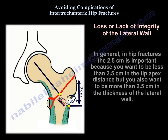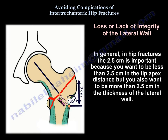In general, for hip fractures, 2.5 cm is a critical threshold: you want the tip apex distance to be less than 2.5 cm, but you also want the thickness of the lateral wall to be more than 2.5 cm.